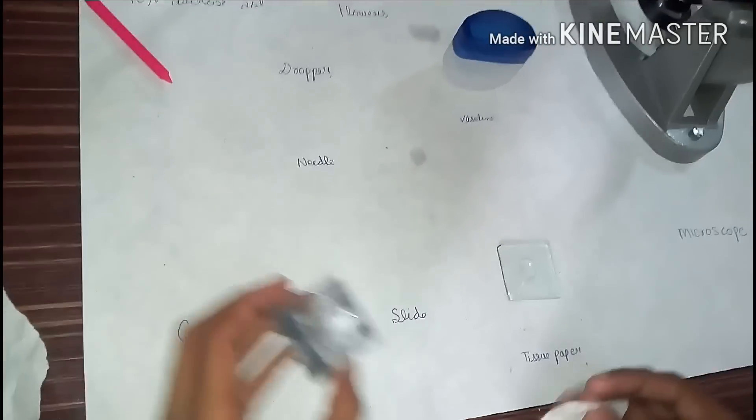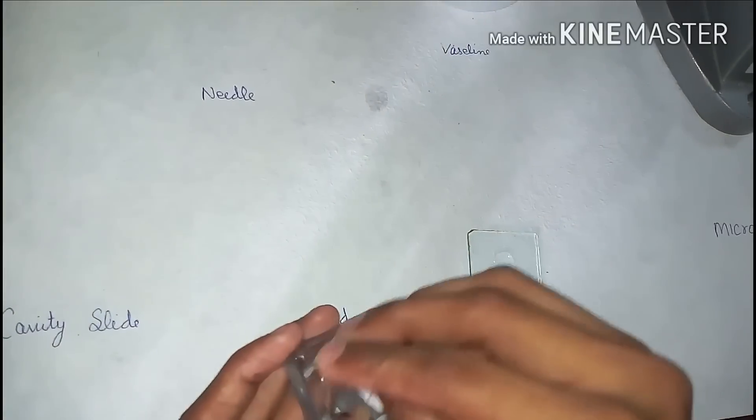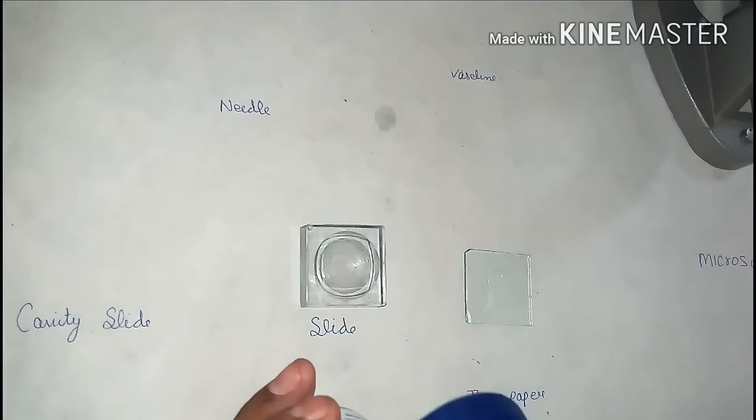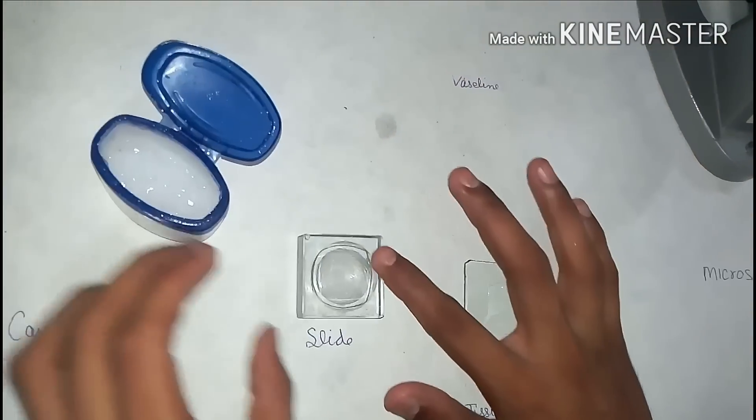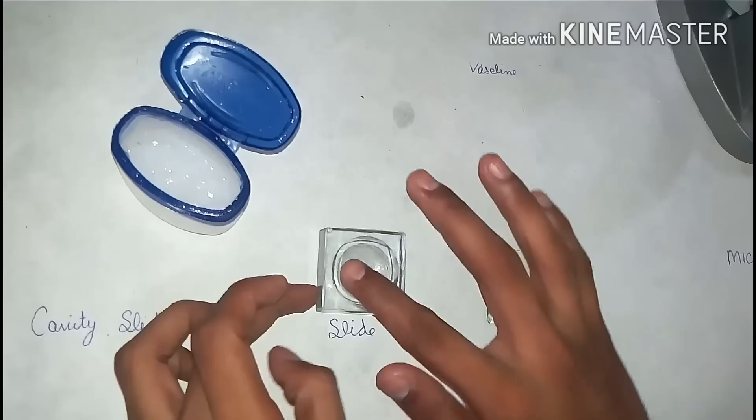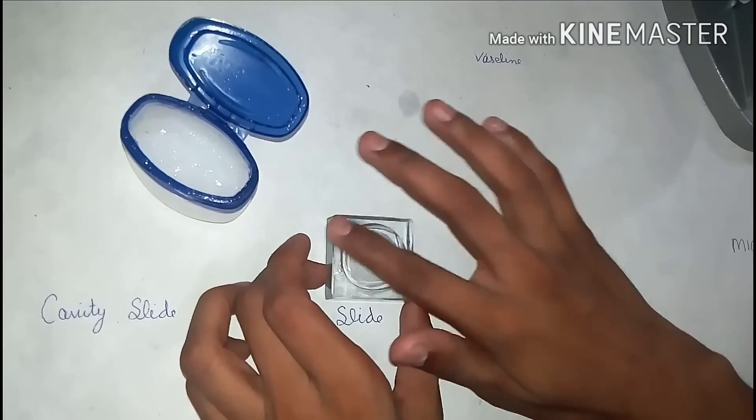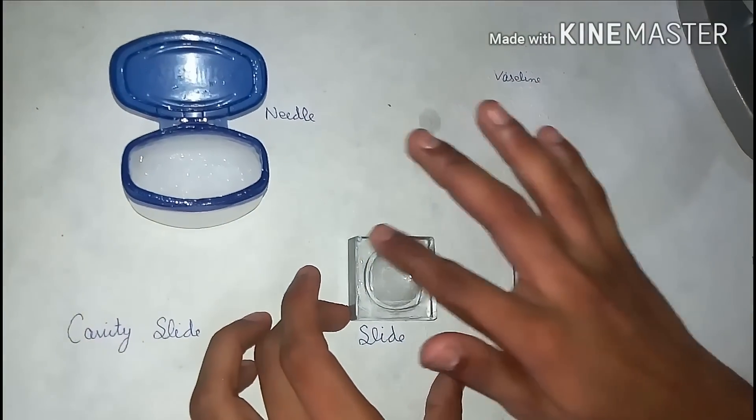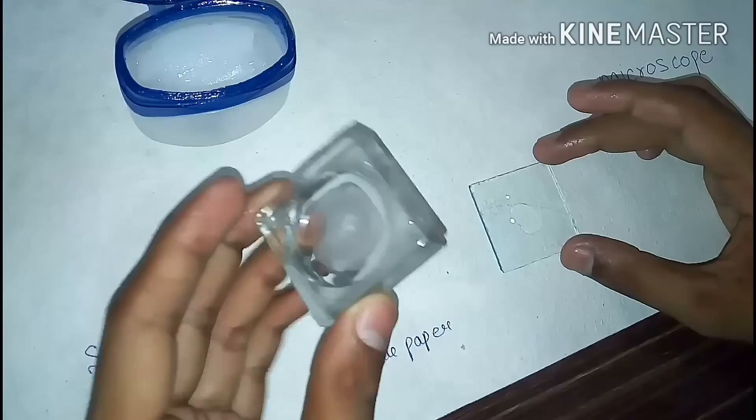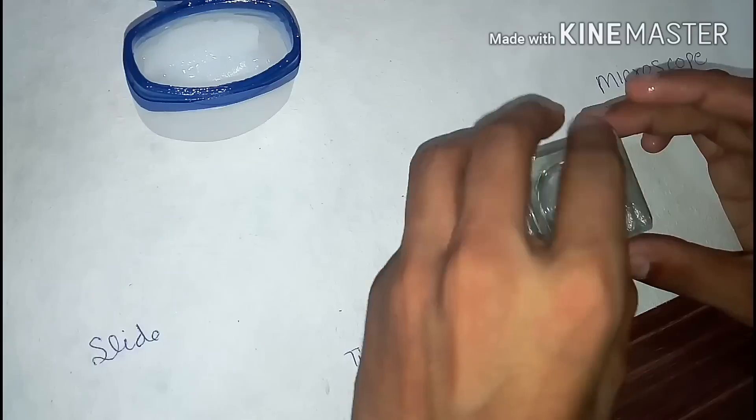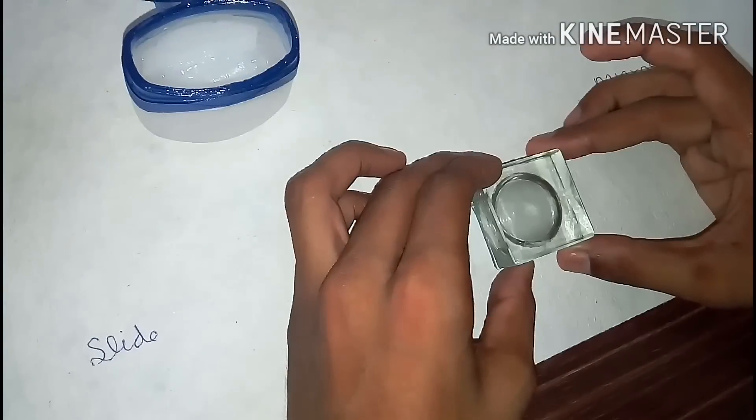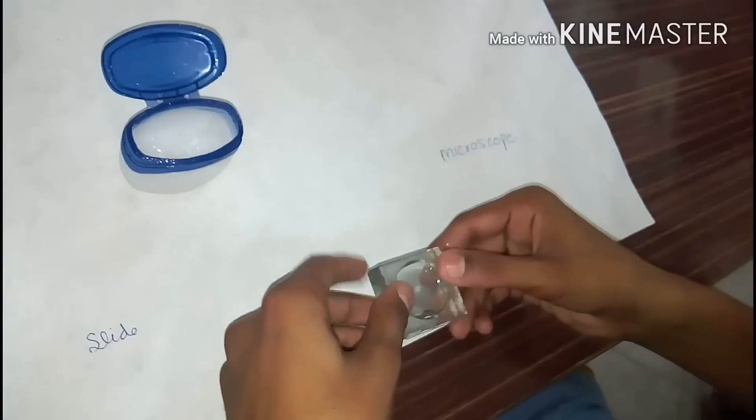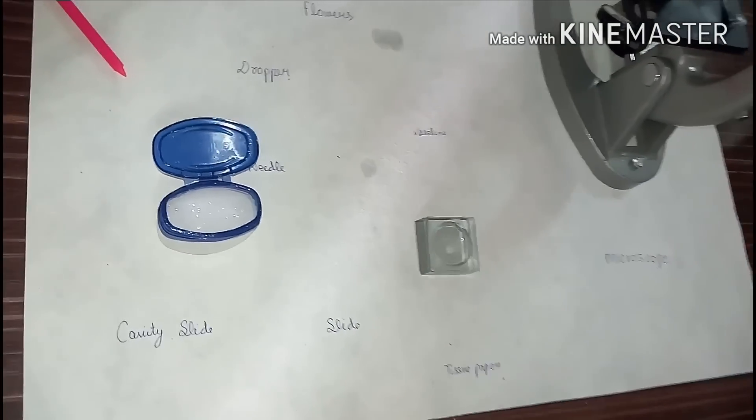Now tear a tissue paper and clean the cavity slide from inside. And apply some vaseline on the edges. Apply it firmly, not in very large amount. We have to just use it to stick the slide on the cavity slide. Just take your cavity slide and put it on the main slide, and finally turn it down. So this is our slide ready.